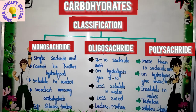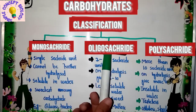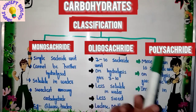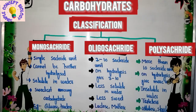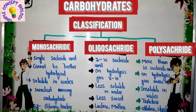The main criteria here is: on hydrolysis, how many saccharide units does it give? On this basis we classify carbohydrates into three categories. The first one is monosaccharide, the second one is oligosaccharide, and the third one is polysaccharide. Now we will discuss the differentiation between these three categories.